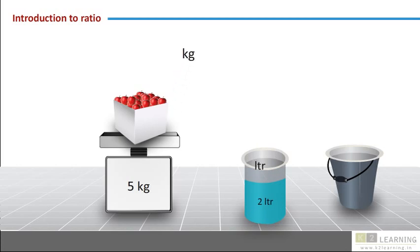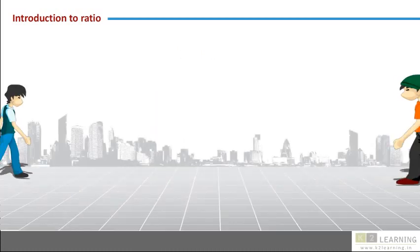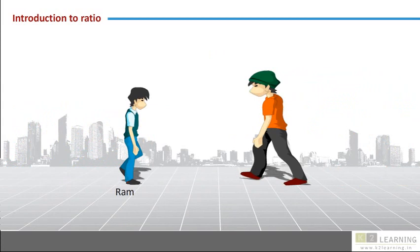Now let us consider two boys, Ram and Shyam. Let Ram weigh 45 kgs and let Shyam weigh 57 kgs. Can the weights of both the boys be considered quantities of the same kind? Certainly. This is because we can compare the weights of the two boys.